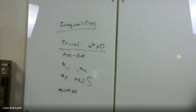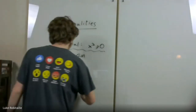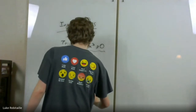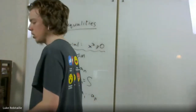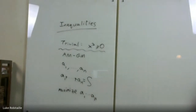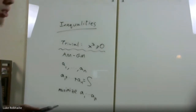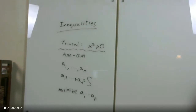So say you have some real numbers A1 through AN, and you fix their sum, and you want to maximize their product. If you play around with some examples, you could see that moving numbers closer together seems to increase their product, and moving them farther apart seems to decrease their product.